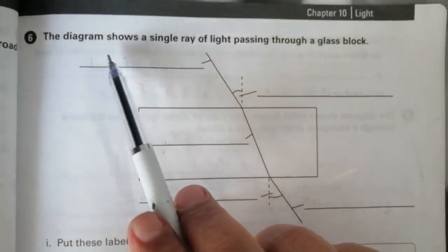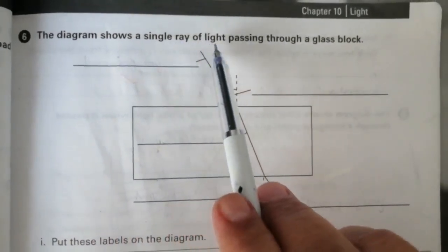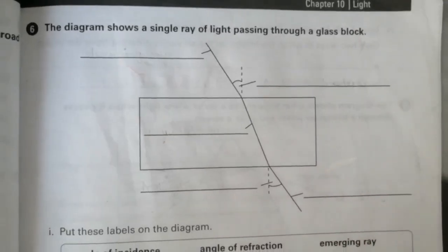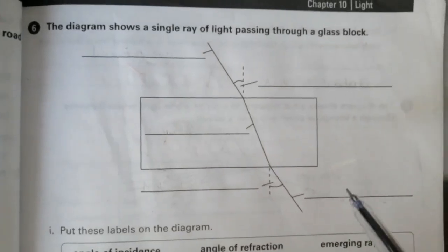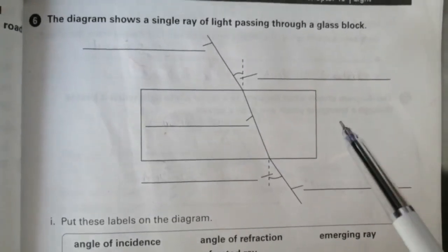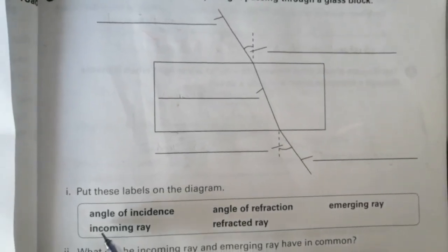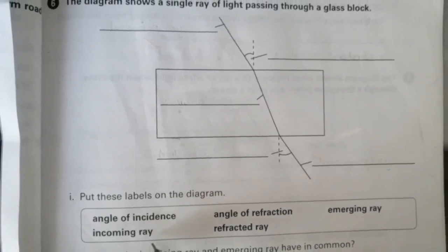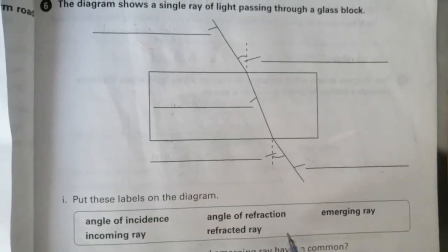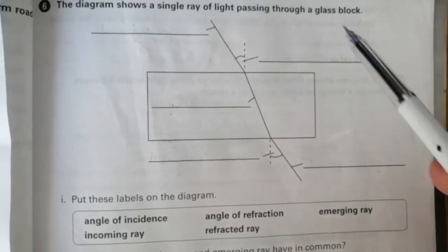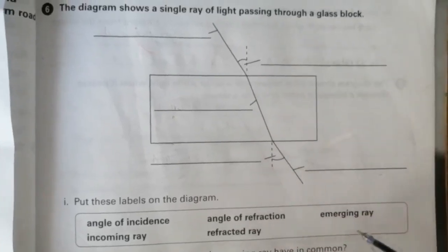Question number 6: the diagram shows a single ray of light passing through a glass block. This is a glass block and we have to put the labels on the diagram. The words are: angle of incidence, incoming ray, angle of refraction, refracted ray, and emerging ray. We have to label this diagram using these words.